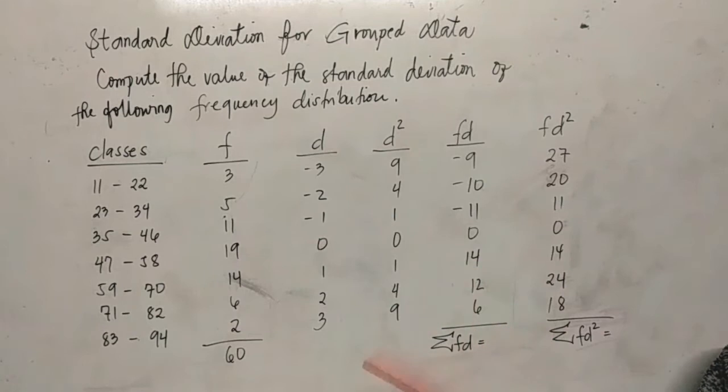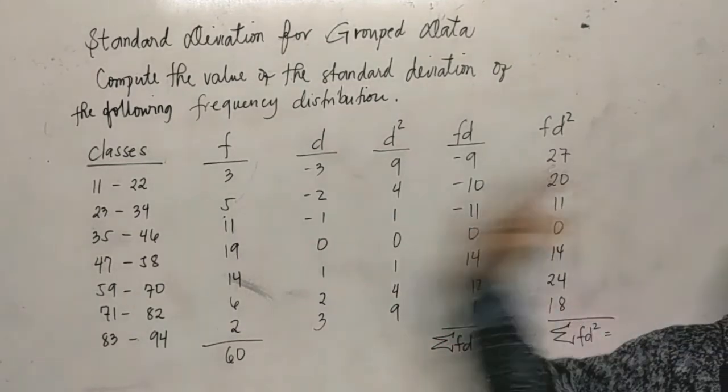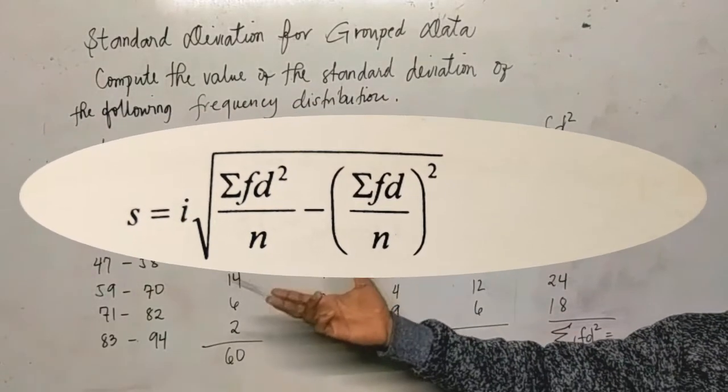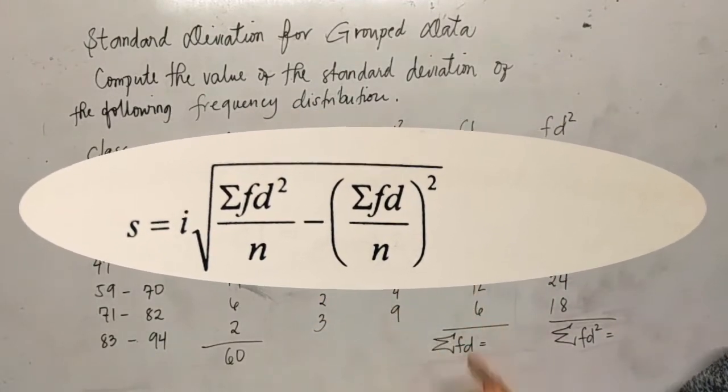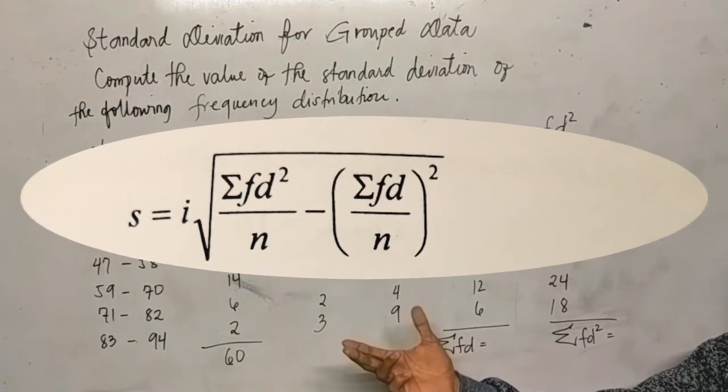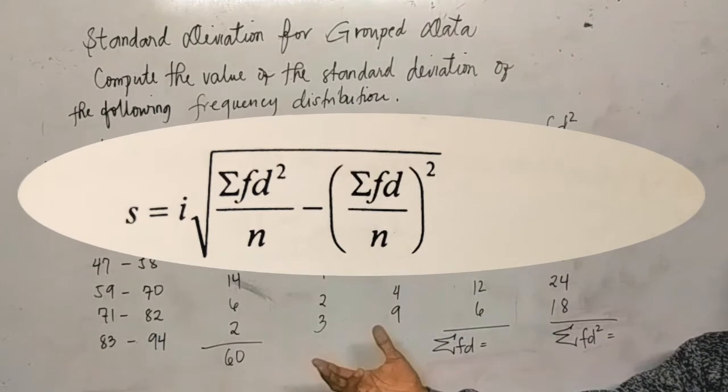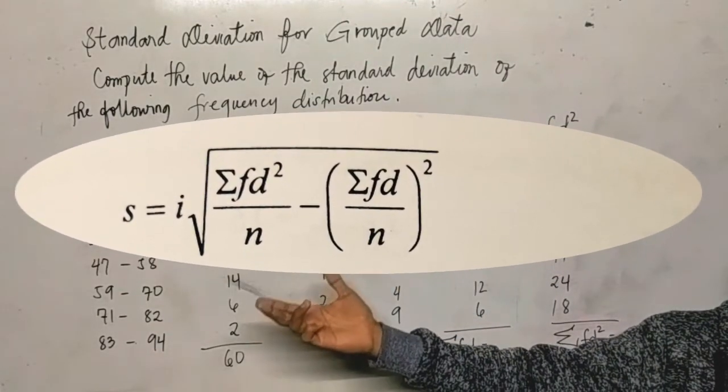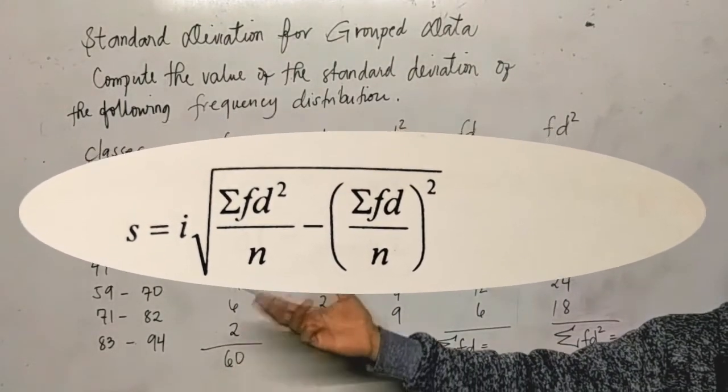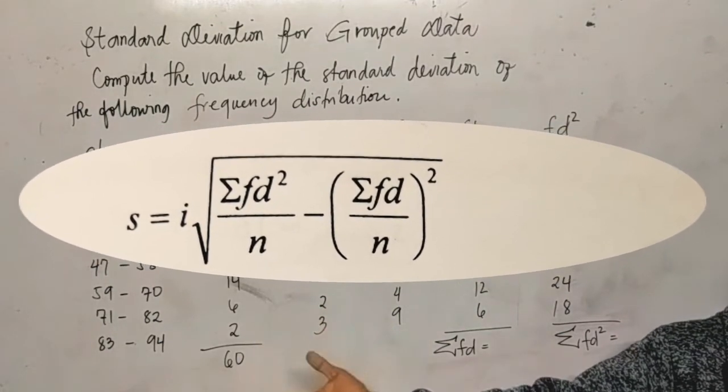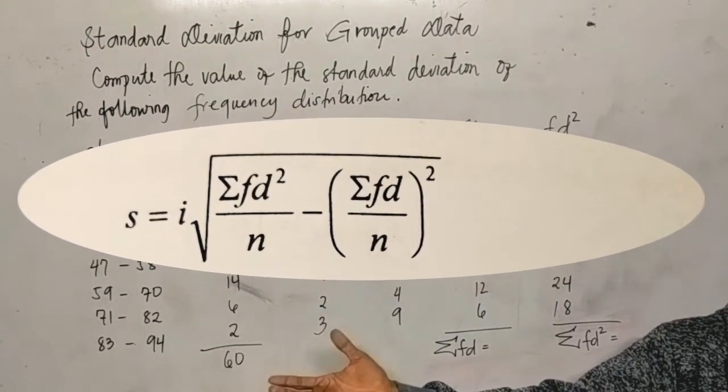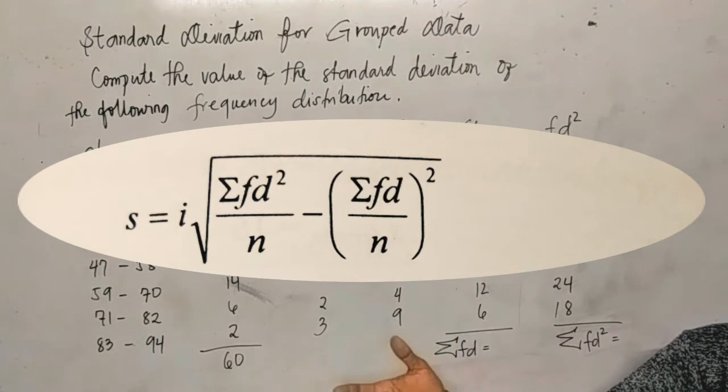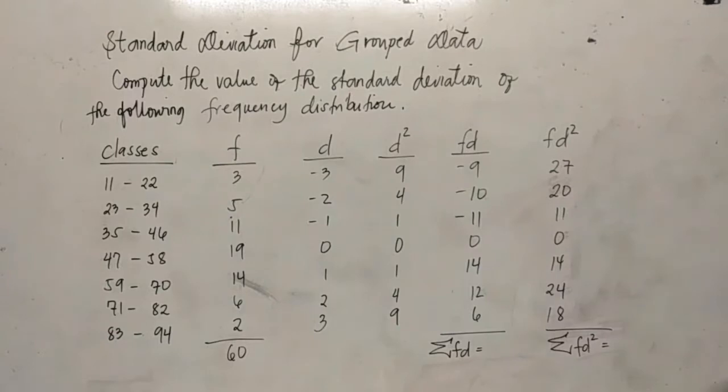We know that there are several formulas that are given to compute the standard deviation of a set of data shown in a frequency distribution. However, we'll only use one formula. So this formula is this one. This is one that uses the steps in finding the mean using the unit deviation for grouped data.